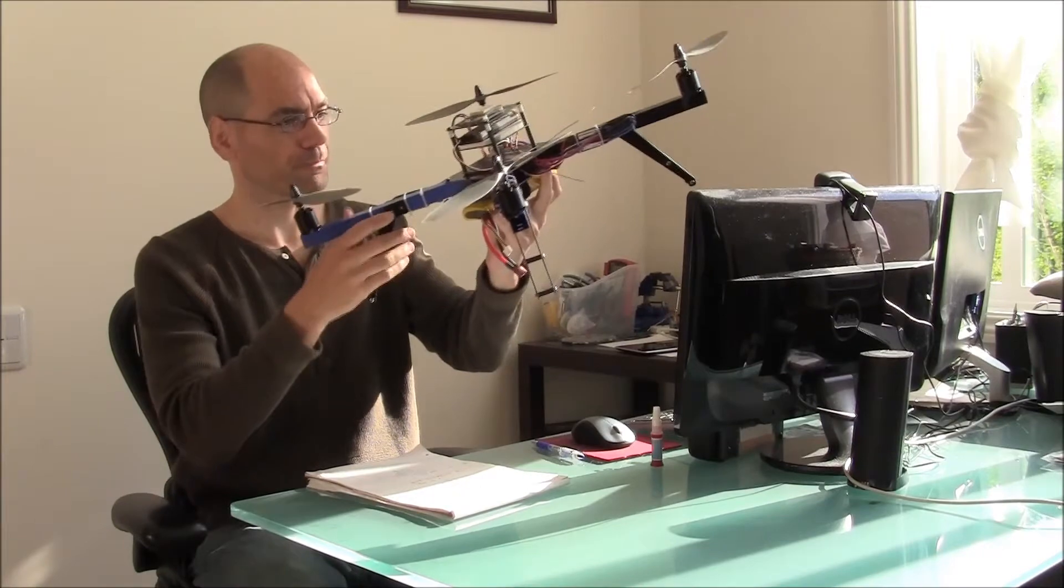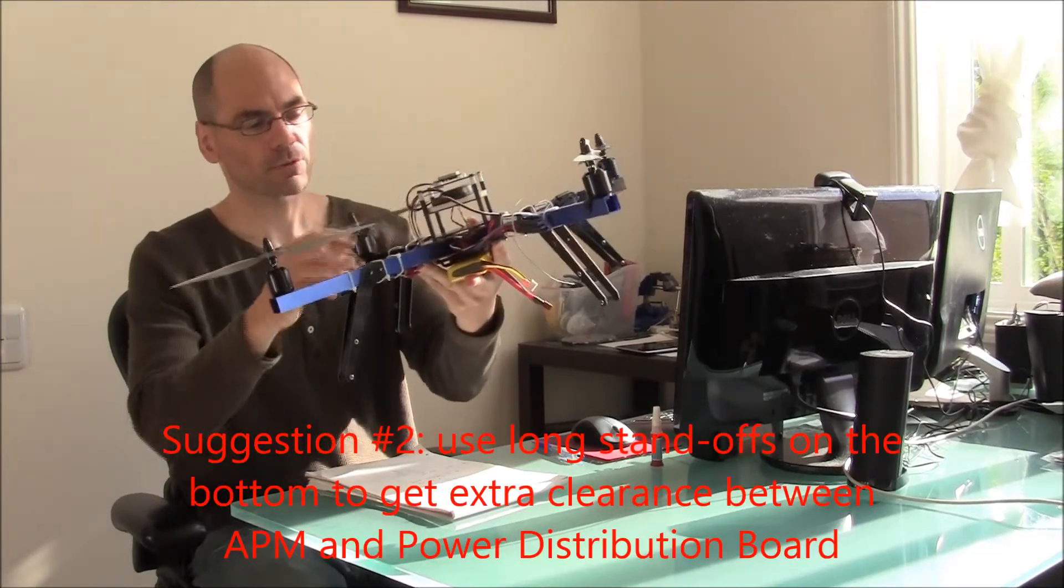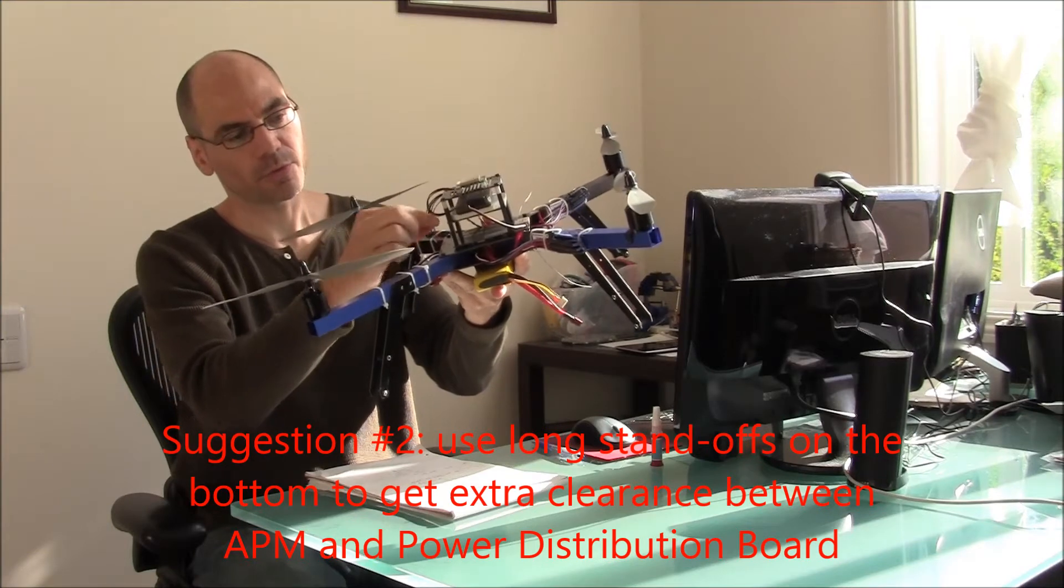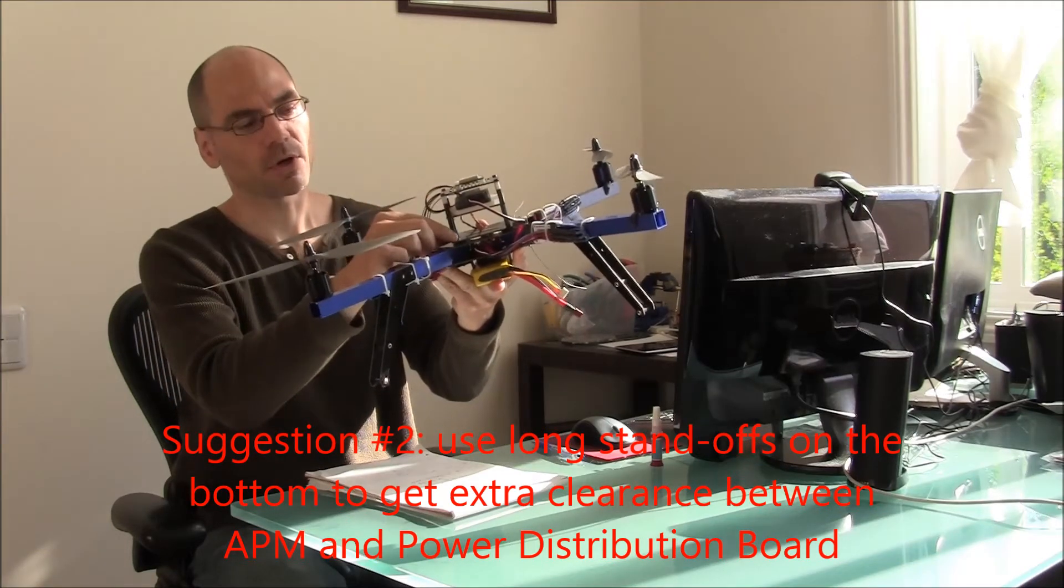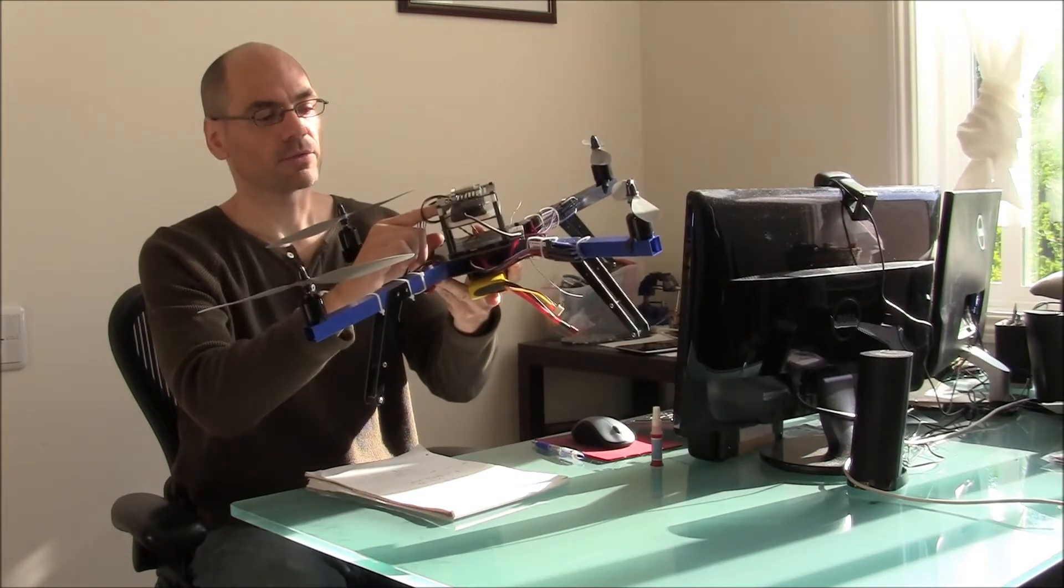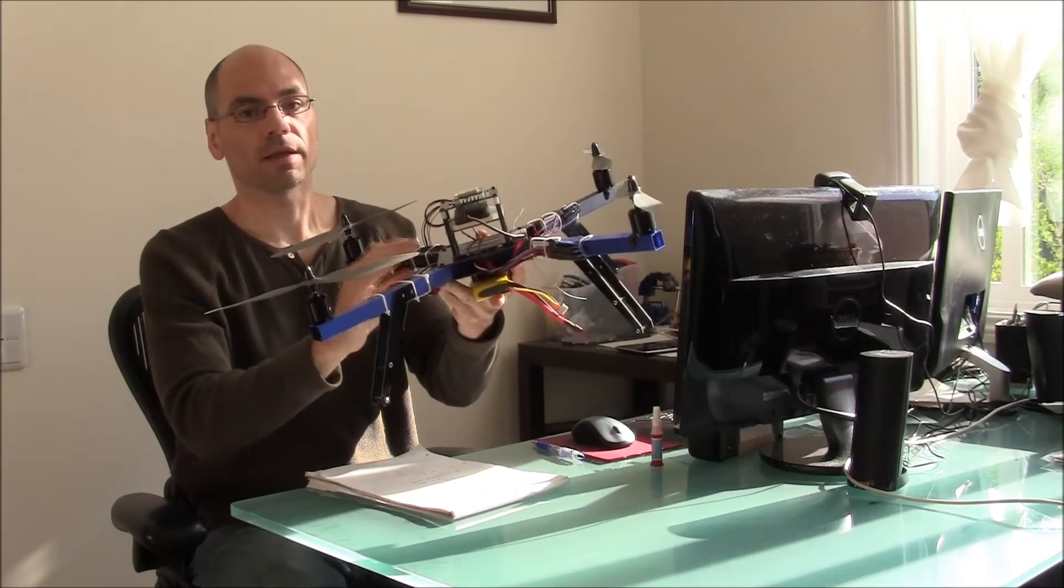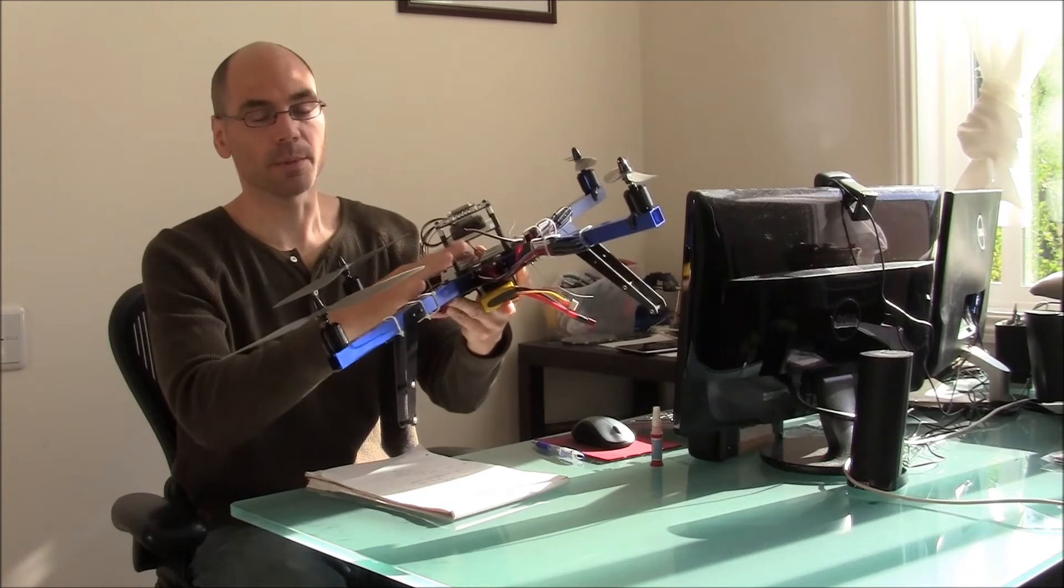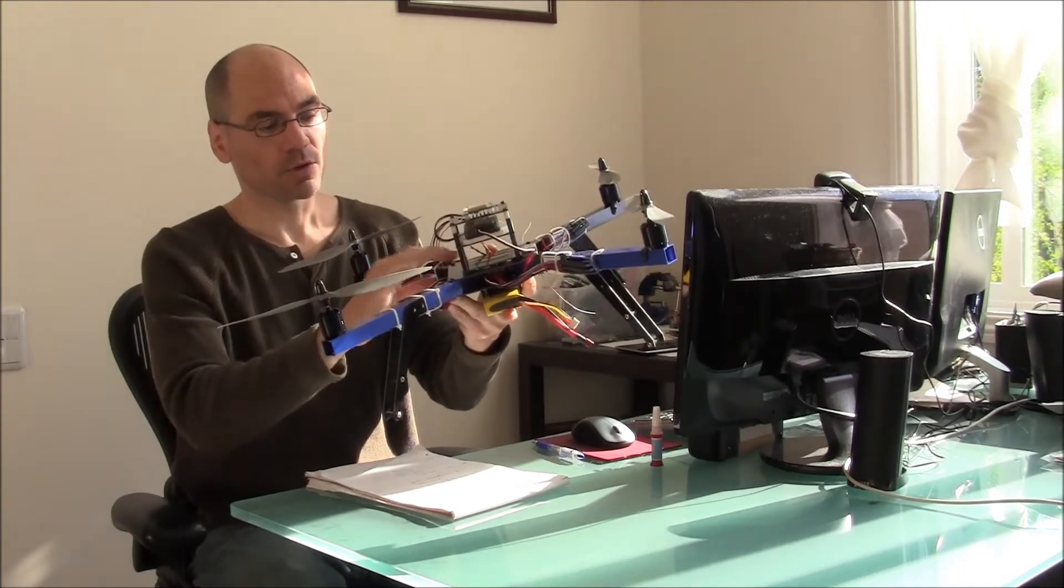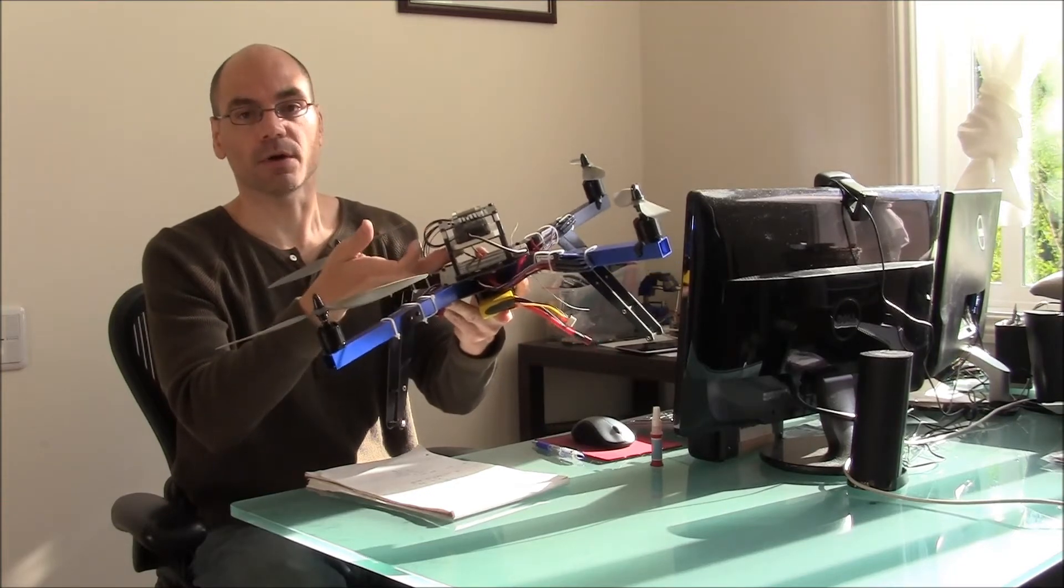The next thing is, in the instructions for building the 3-yard quad, they tell you to put the little standoffs on the bottom and the big standoffs on the top. The issue with that is that there's a lot of magnetic interference coming from the PDB and the battery, so you want to get the APM up as high as possible.